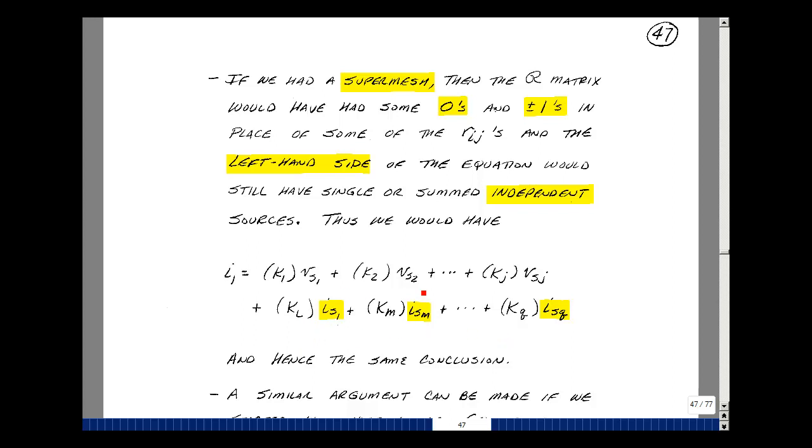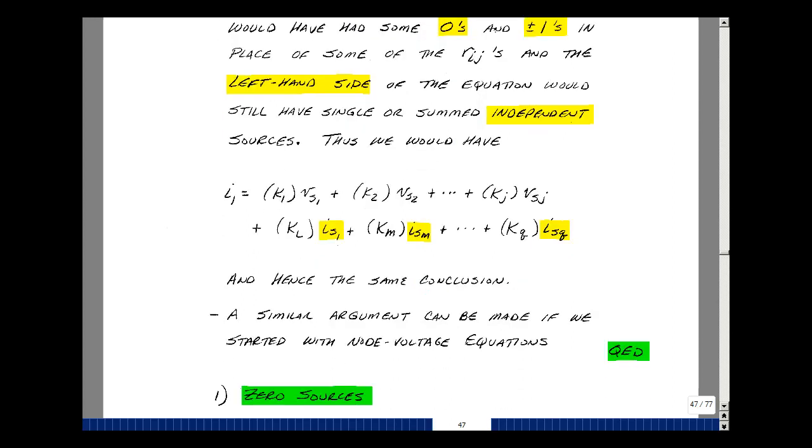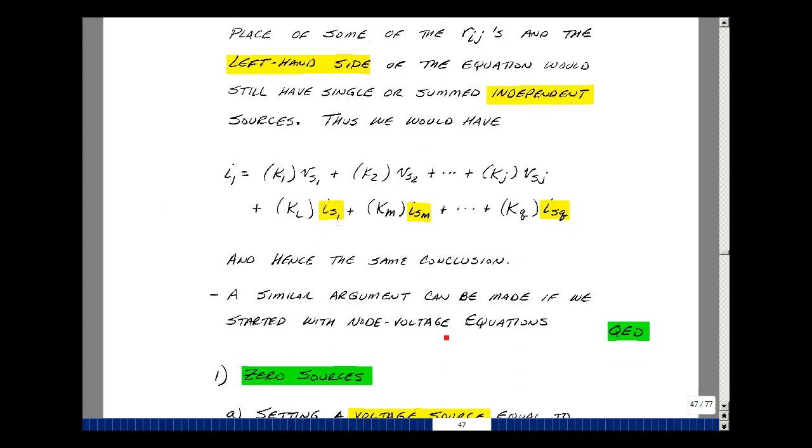But our technique would then be the same. If we set all the voltage sources equal to 0 and all the current sources except this one, then we could find this particular term, K sub L. And we could proceed to the next one and the next one. We could do a similar argument if we started with node equations. And that's the proof for superposition.